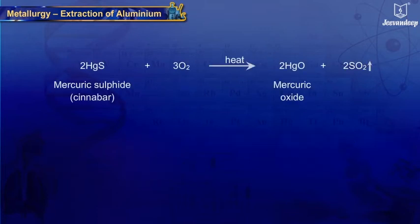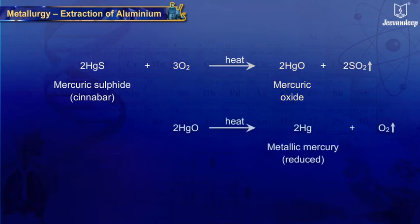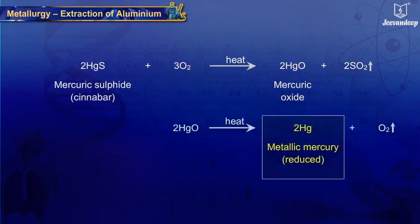Similarly, when cinnabar, that is HgS, an ore of mercury, is heated in air, it is first converted to mercuric oxide which on further heating is reduced to mercury.